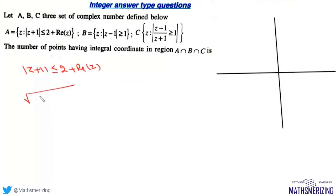This is the square root of (x+1)² + y², which will be less than or equal to 2 + x. Clearly, x is greater than or equal to -2.